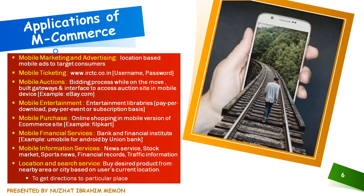Mobile information service includes news service, stock market data, sports news, financial records, traffic information, and more delivered to mobile phone users. Next is location and search service — when doing any commercial transaction via mobile device, the current location of the mobile phone plays a vital role. Location and search provides a list of sources in the city or nearby area of the user's current location for the desired product. Knowing the location of the mobile user allows the vendor to provide location-based services such as local maps, local offers, local weather, people tracking, and monitoring. It can also be used to get directions to places like movie theaters, restaurants, hospitals, or other places.